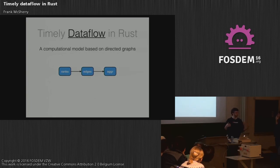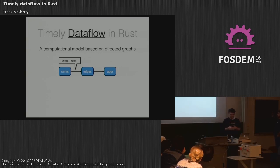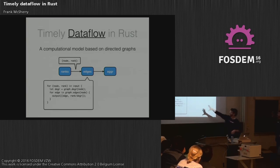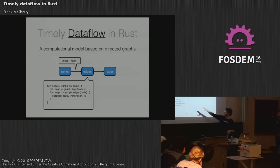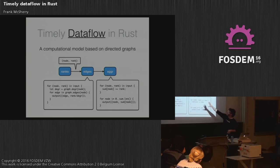Dataflow is a computational model based on directed graphs where vertices correspond to computation and state, and edges correspond to communication. Thinking about PageRank, you have bits of data that flow around — node and rank announcing its PageRank — moving between parts of the dataflow graph. As they land at particular places, computation happens. Logic says: every time a node and rank shows up, look at the edges associated with that node, scale the rank by the degree, and ship the result to all downstream neighbors. A little further on, there's an aggregation that adds things up in place.